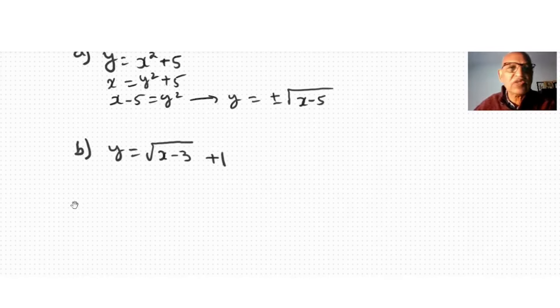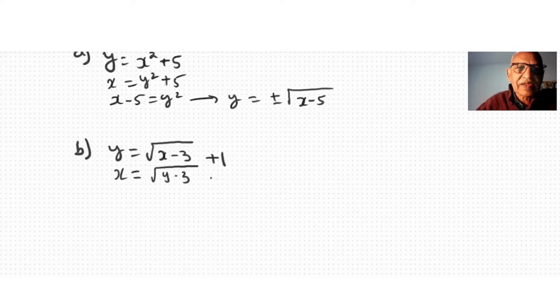And then if we do the other example, finding inverse means isolate x and y, isolate the y after exchanging them. So exchange x and y. Instead of y we write x, instead of x we write y plus 1. We isolate something with the y, so I bring the one to the other side: x minus 1 equal to square root of y minus 3.